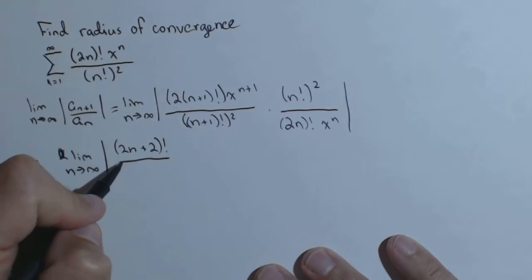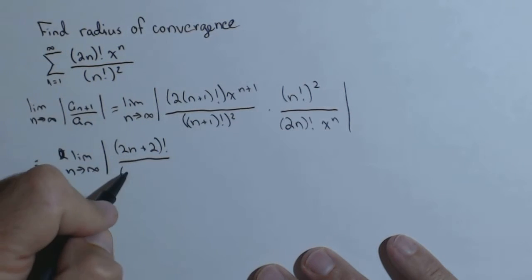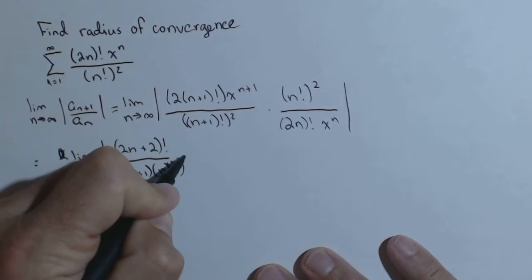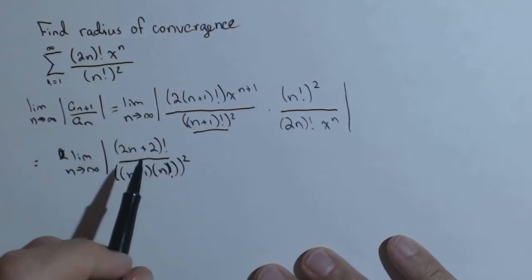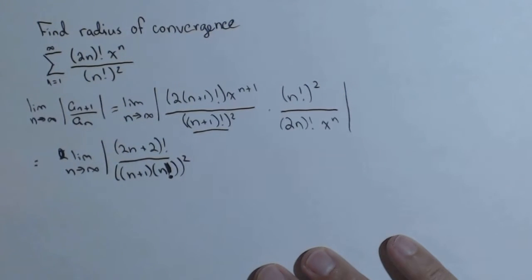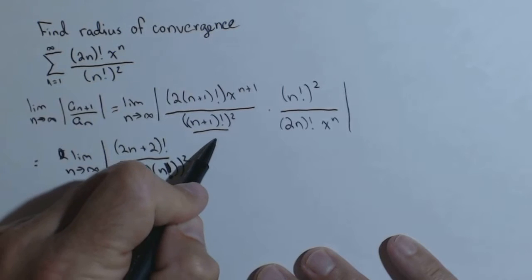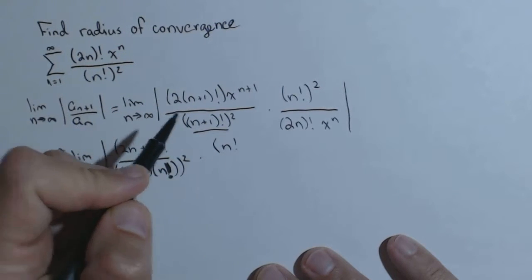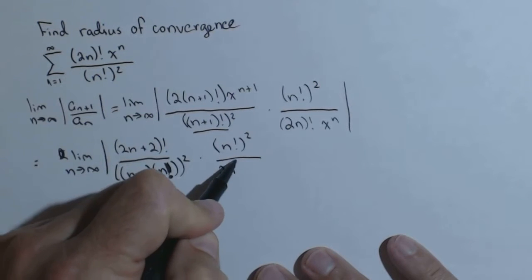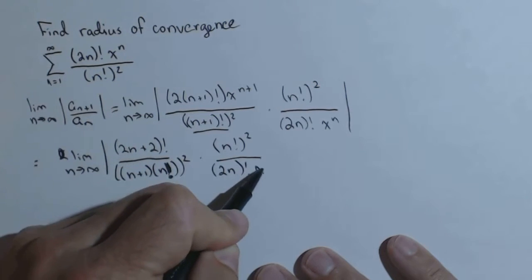So, n plus 1 factorial, this one I'm just going to write as n plus 1 factorial, we can rewrite as n plus 1 times n factorial squared. I'm rewriting the n plus 1 factorial there, that's a factorial symbol. And here we've got n factorial squared, 2n factorial x to the n.